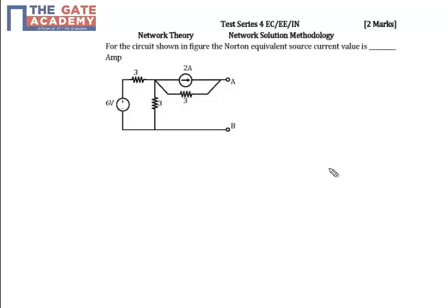In this question, we have to determine the Norton equivalent source current. We will be transforming this circuit into a circuit with two voltage sources. That is, we are converting this current source into a voltage source.